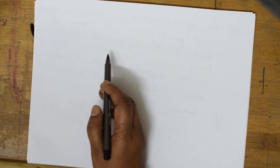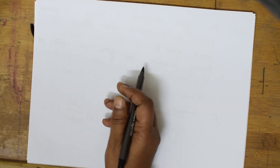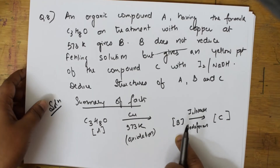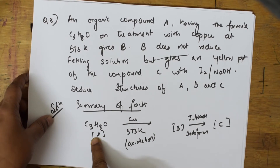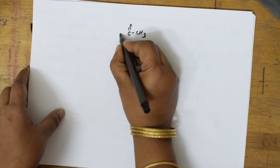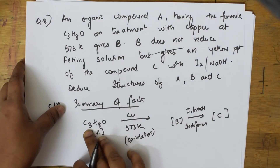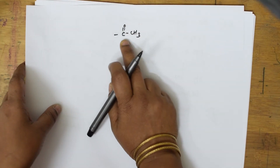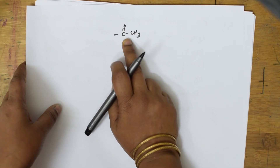Compound B does not reduce Fehling's solution but gives a precipitate with iodoform reaction — I2 and NaOH. That means compound B compulsorily has a methyl ketone group. Writing compound B as a methyl ketone: CH3-CO-. In the formula C3H8O, two carbons are used here, so one carbon remains.